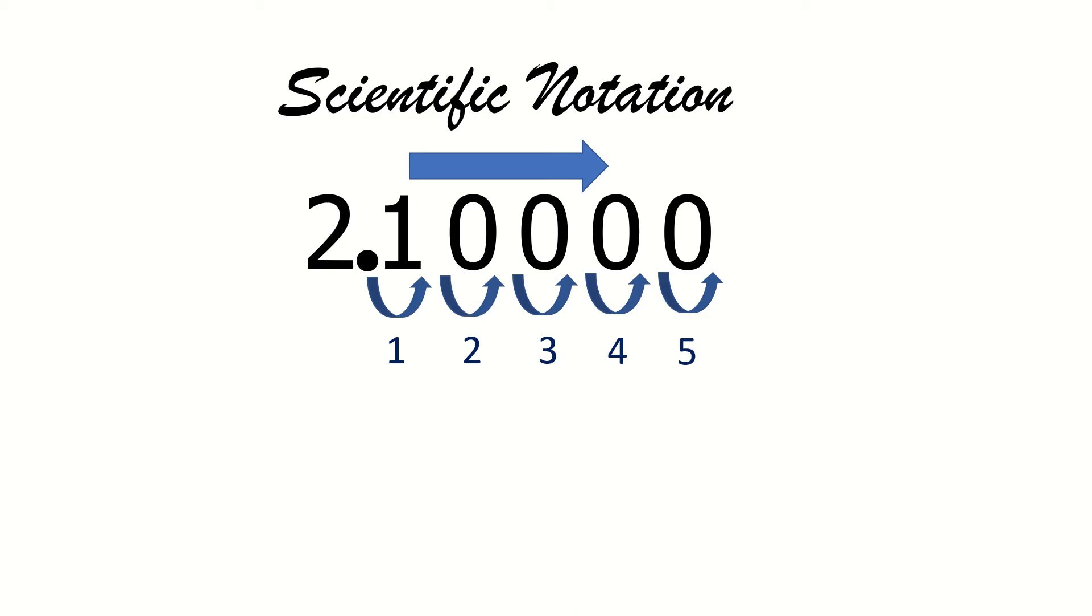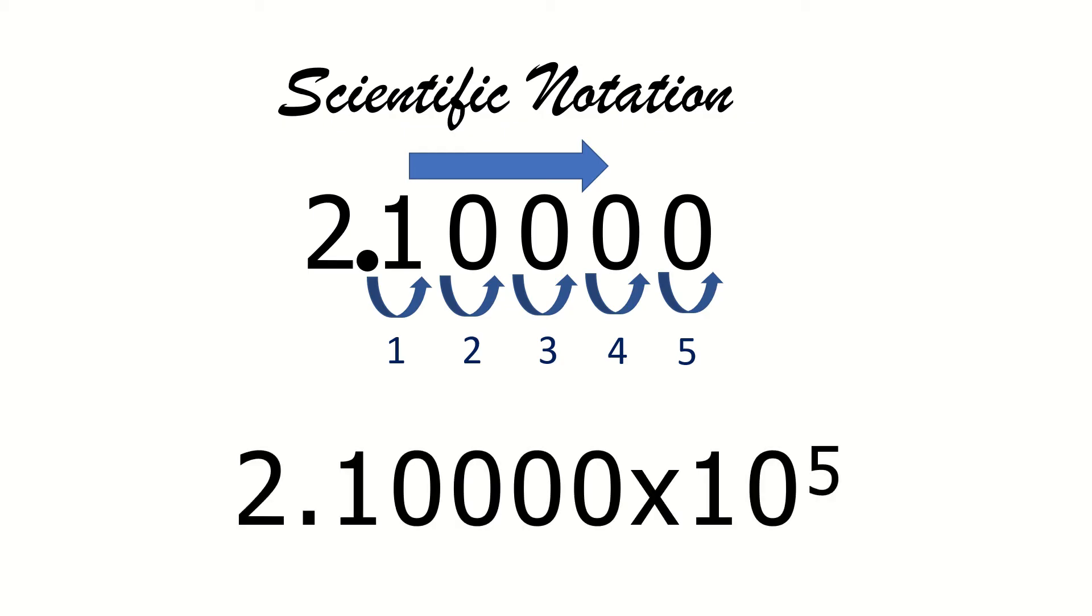Do you understand? How are we going to write the scientific notation then? It will now be 2.10000 times 10 to the power of 5. 2.10000 because that would be this one, times the base to the exponent of 5 because there are 5 decimal places. If the zeros are significant, then you're going to write it here. If the zeros are not significant, you will stop at 1, making your scientific notation as 2.1 times 10 to the power of 5. Okay? Very good.